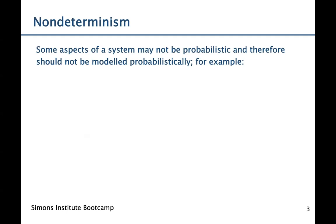So first, what's the difference between MDPs and DTMCs? In MDPs, we also have non-determinism. Why do we need this? Well, for some aspects of a system, they might not be probabilistic, and therefore it doesn't make sense for us to try to model them probabilistically.